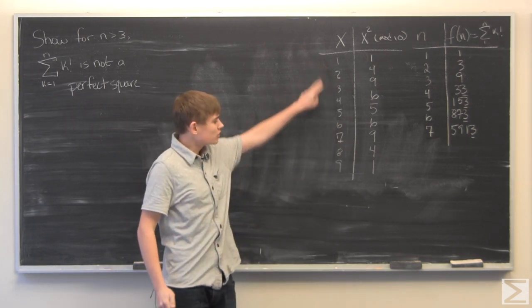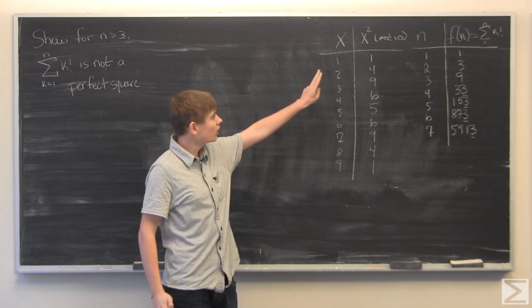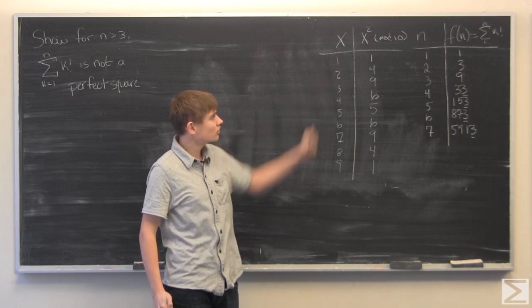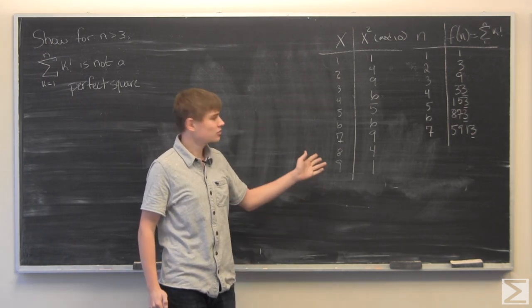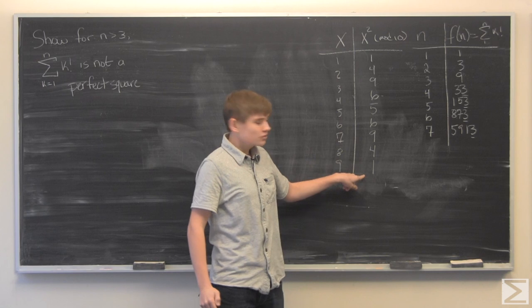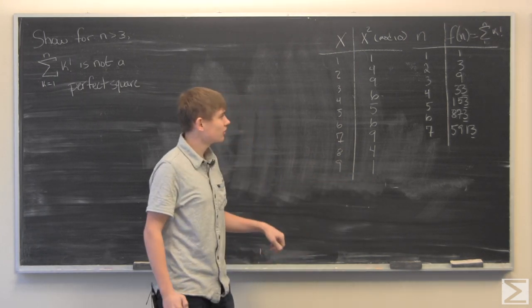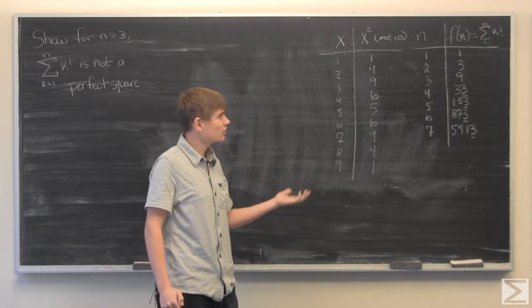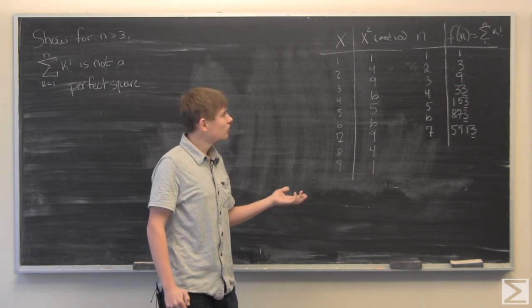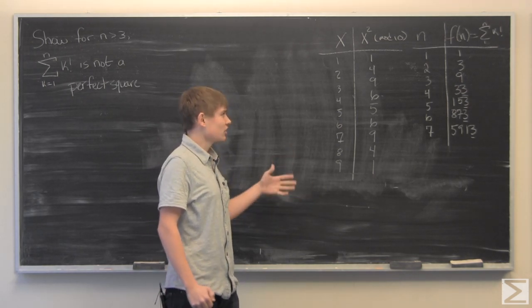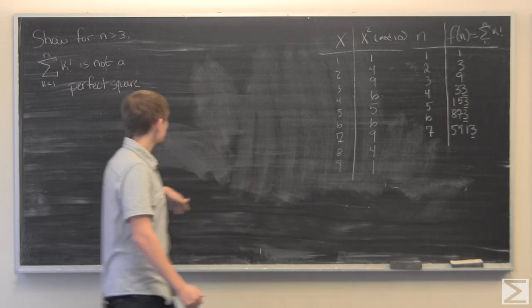If you take the numbers from 1 to 9 and you square them and you take that modulo 10 you'll get these numbers. You'll see that 3 is not there which means that 3 is not a... you cannot square a number and take the modulo and get 3, which means based on our past work...